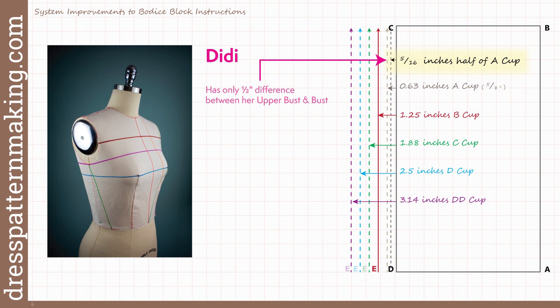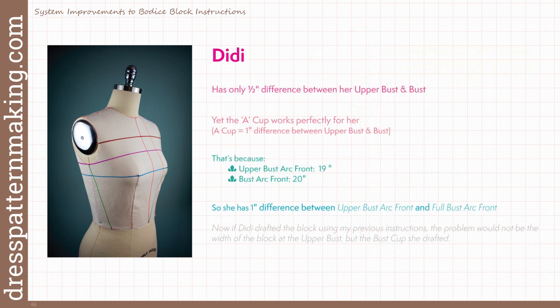So even though she measures only half an inch more in the upper bust, she needs the angle that you get with one inch difference. And the reason for that is obvious when you look at her front arcs, upper bust and bust. Her upper bust arc front is 19 inches and her full bust arc front is 20 inches.